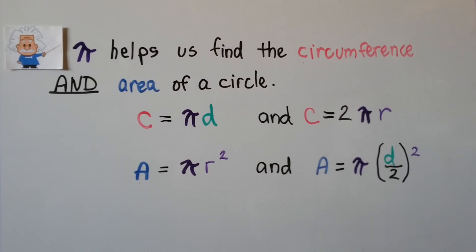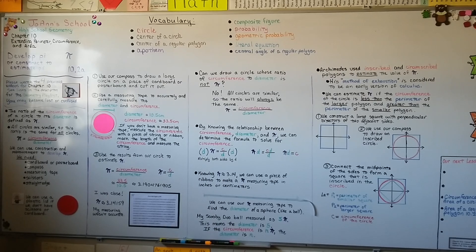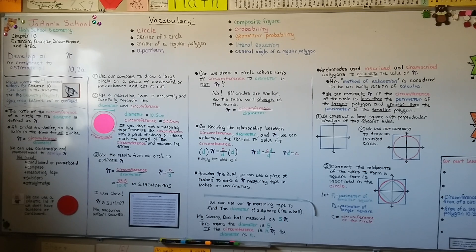We're going to talk about circumference and area of a circle in the second part of this lesson — that'll be 10.2b. Then we'll do the third part of the lesson covering area of a regular polygon. I hope you understand the relationship between circumference, diameter, and pi. See you in the second part — have a great day!